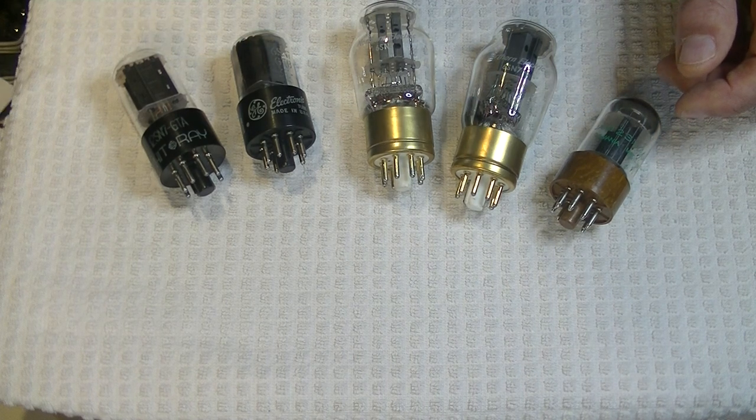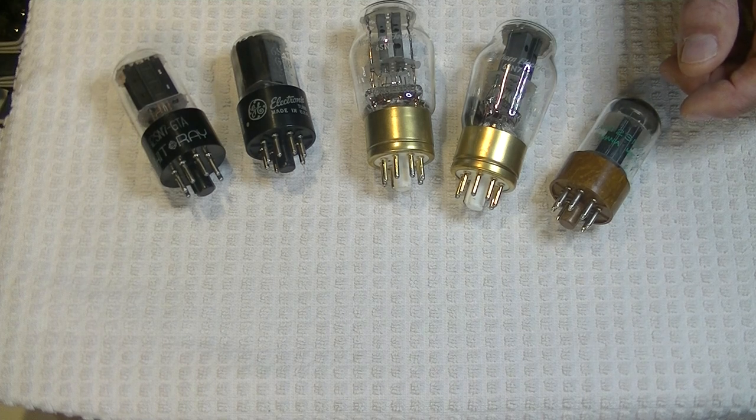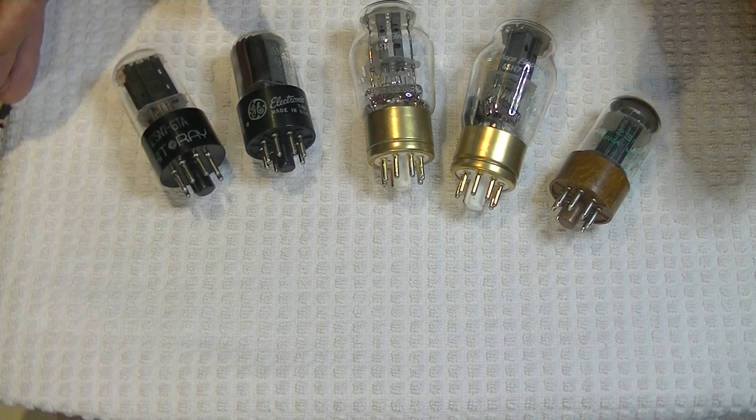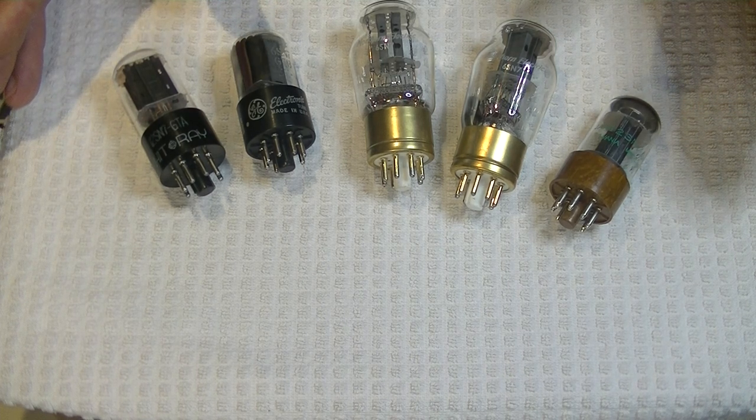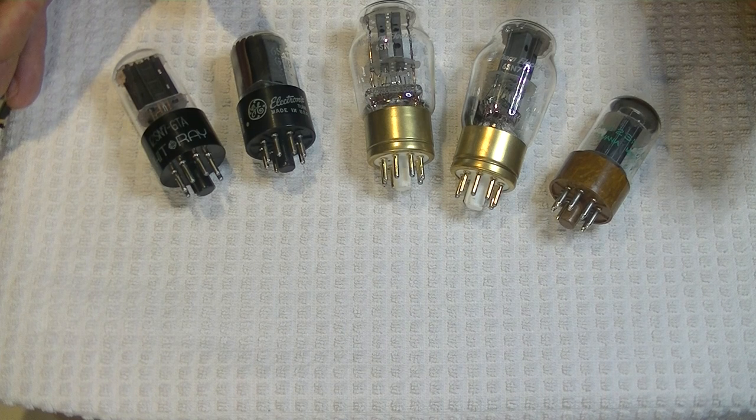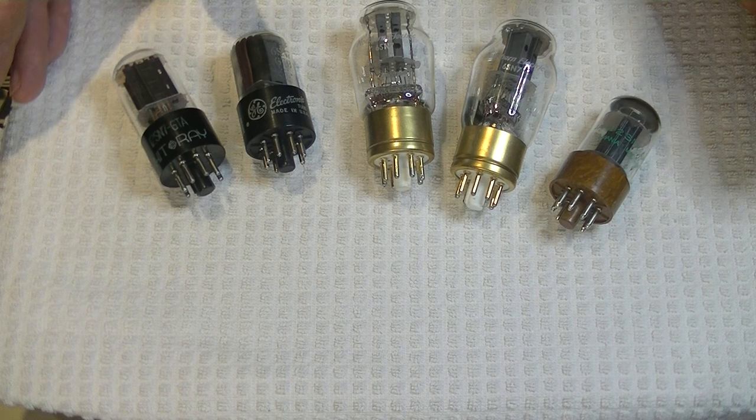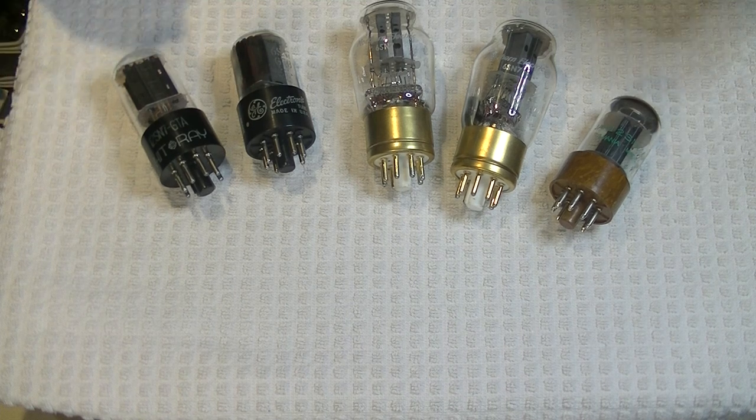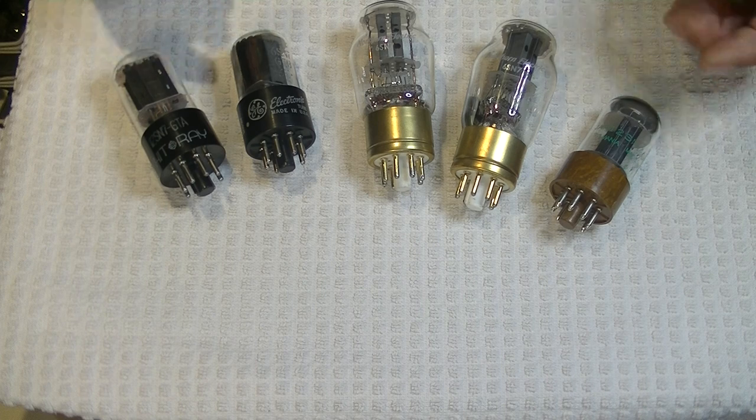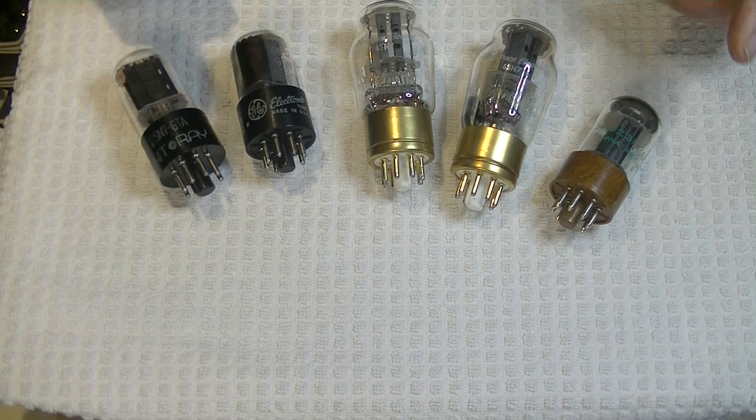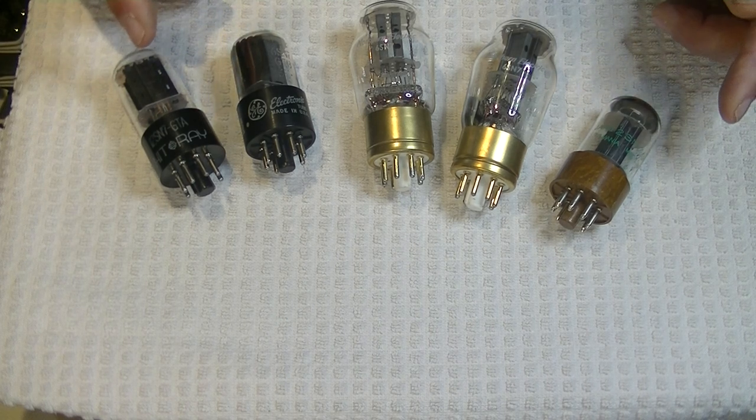Now, I want to say something I've been thinking for a long time. I'm going to say it out loud. I think the 6SN7GT and the GTA or B are two different tubes. Yes, they're in the same family. Yes, they have the same pinout. Yes, they work in similar circuits. But the specifications are very different.